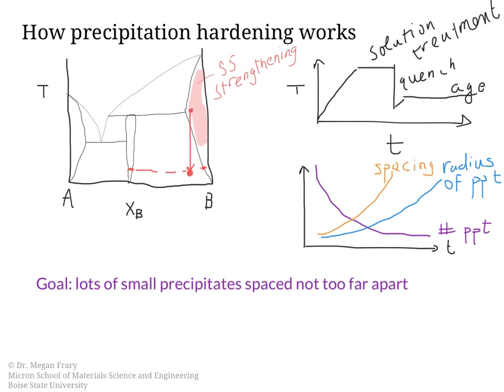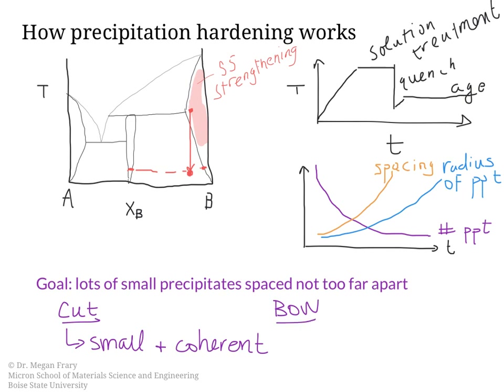This is the most effective in impeding dislocation motion. When the precipitates are very small, the dislocations actually cut right through them — this is the case if the precipitates are small and also if they are coherent with the matrix. The other option is that the dislocation will basically bow around, and that's the case when they are large and/or incoherent. That sort of transition is what we're interested in between those two mechanisms.